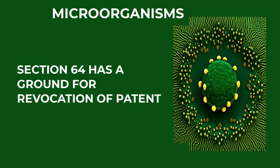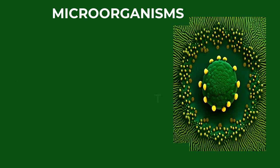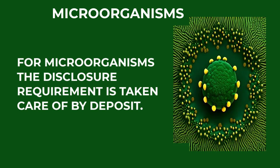That could be a ground for revocation of a patent. Section 64 has a ground on which you can revoke a patent because the enabling disclosure is not there, and in opposition proceedings there is also a ground on which a patent can be revoked, canceled, or opposed because it does not satisfy the disclosure requirement. For microorganisms, the disclosure requirement is taken care of by deposit, because it is very hard to describe the full functioning of a microorganism — so we have the Budapest Treaty.